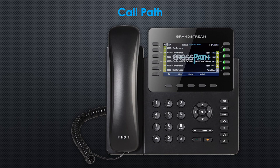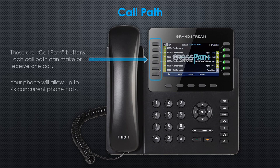Call Path. Similar to a traditional analog phone line, a call path can make or receive one call. Your telephone has a total of six call paths, therefore allowing up to six concurrent telephone calls.